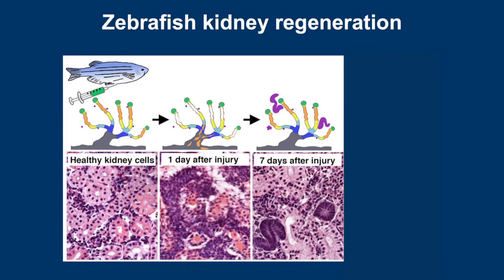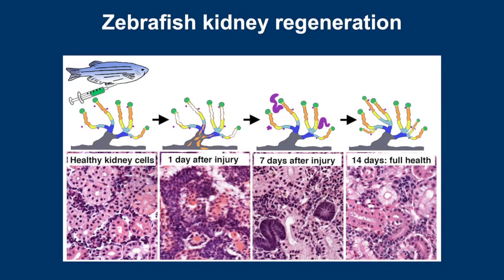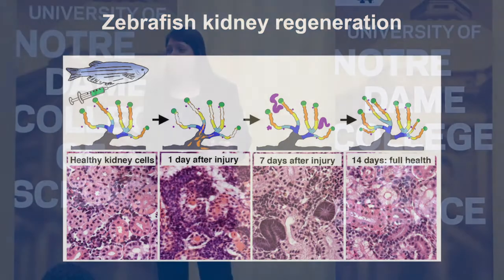Fish can also do something else quite fascinating: they not only regenerate the cells in the tubes themselves, but they actually make entirely new tubes — new plumbing into the existing tubes. So fish have two major phenomena to counteract kidney damage. By another week later, all those tubes are functional. A fish can respond to an acute kidney injury that in most people would require dialysis and ultimately a kidney transplant, and in two weeks essentially say, 'No problem, I just made myself a new kidney.'